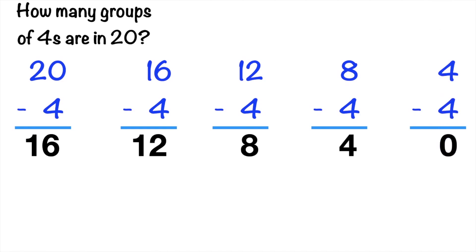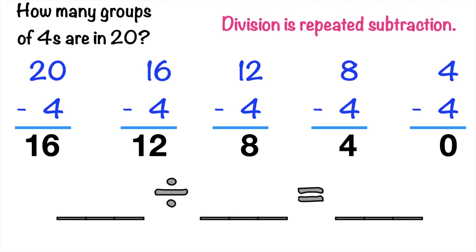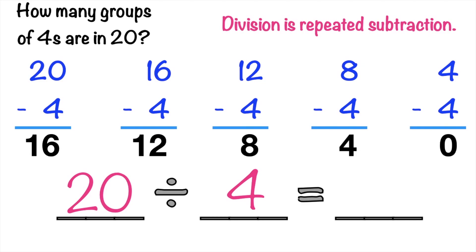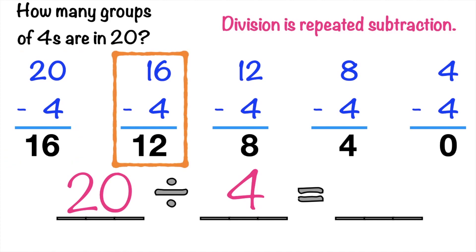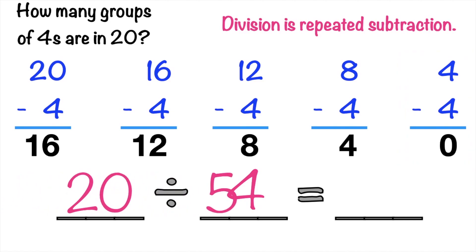Very good! So, division is repeated subtraction. You subtract the numbers as many times as you can until the difference becomes 0. The quotient is the number of times you subtracted the numbers. So, let's write the division sentence. What is the dividend here? Good job! It's 20. How about the divisor? That is 4. And the quotient? To know the quotient, that is the number of times you subtracted the numbers. Let's count the subtraction sentence: 1, 2, 3, 4, 5. So, that means the quotient is 5. We have 20 divided by 4 equals 5.